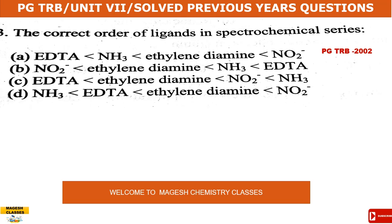Hello viewers, welcome back to my guest chemistry classes. In this video, TRB PG Chemistry Unit Number 7, we cover recorded topics related to previous year questions from the full question set. Unit 7 includes spectroscopy studies on coordination compounds, coordination theories like VBT, MOT, CFT and LFT theories, Jahn-Teller distortion, NMR and ESR spectroscopy. Previous year questions from 2002, 2006, 2007, and 2011. Let us move into the question part.